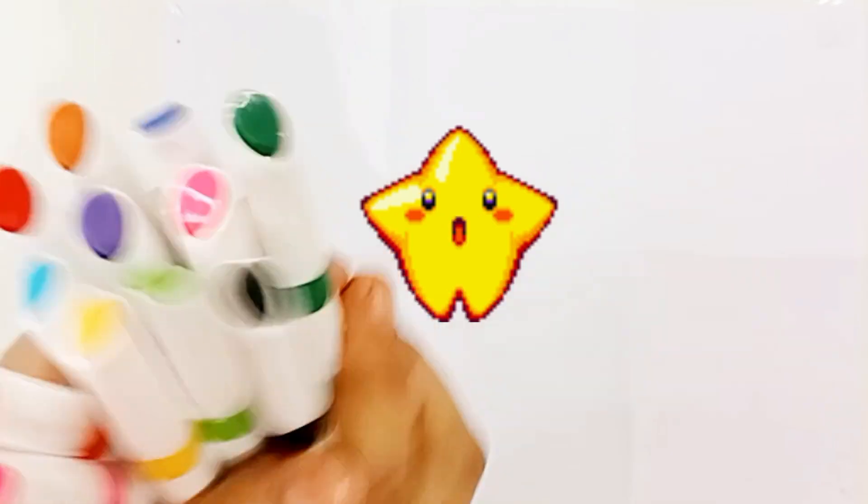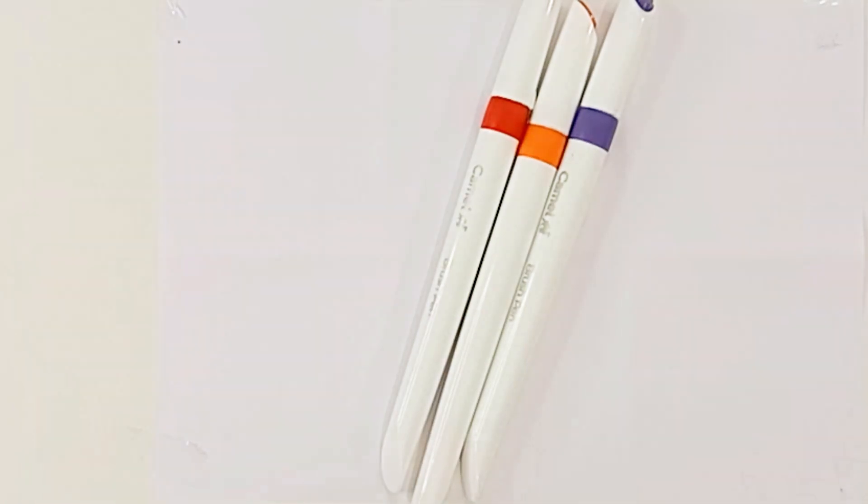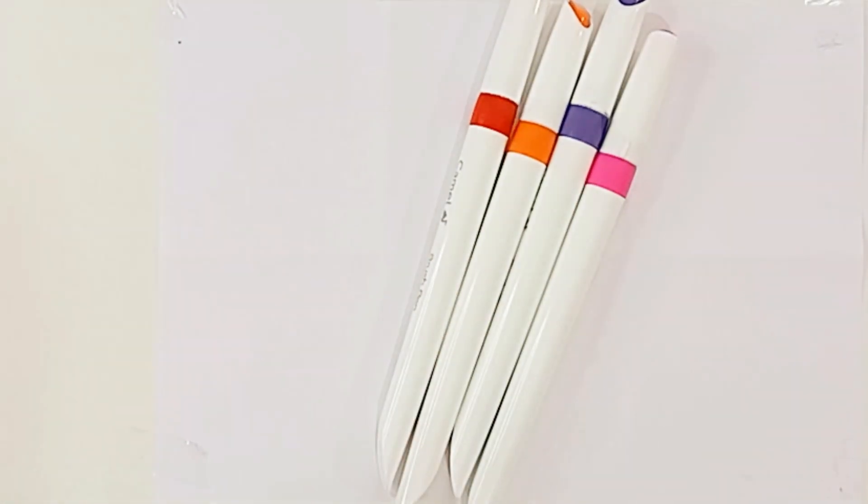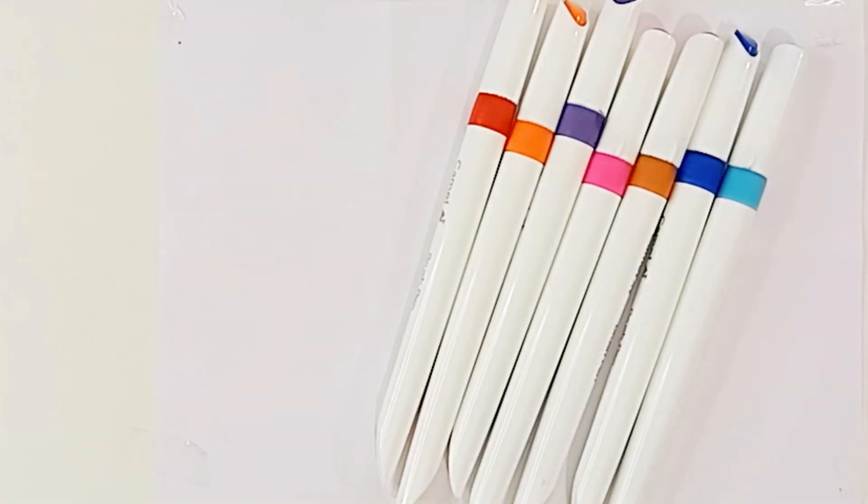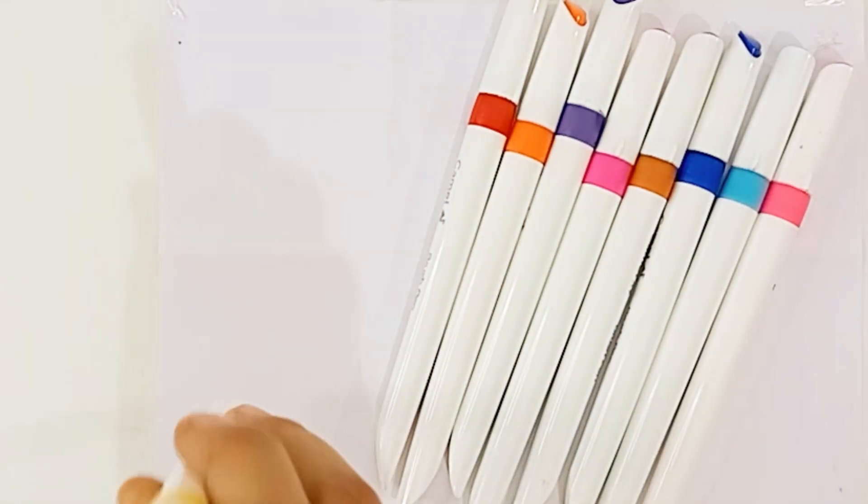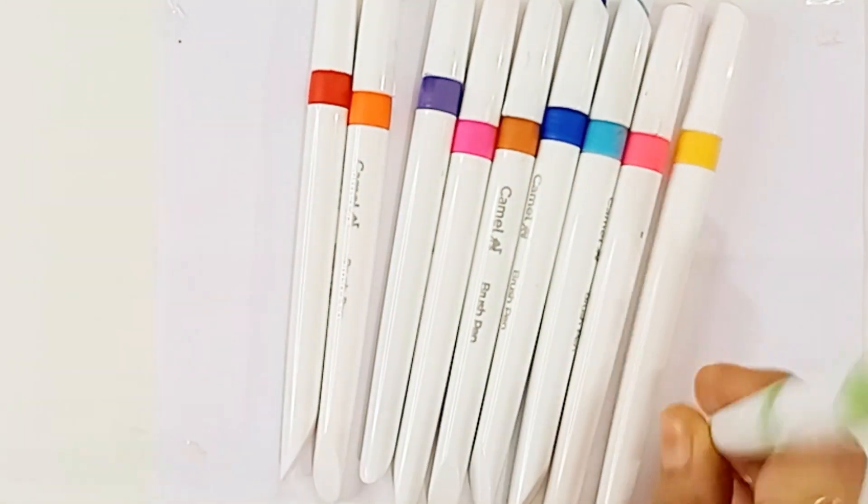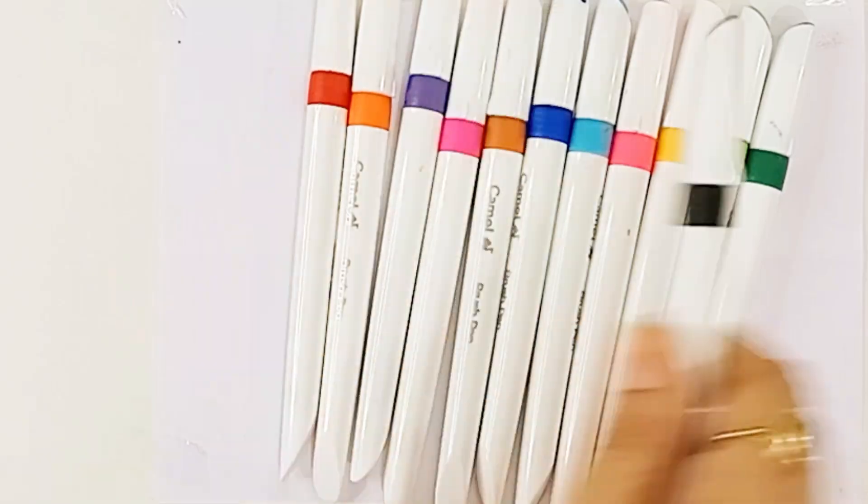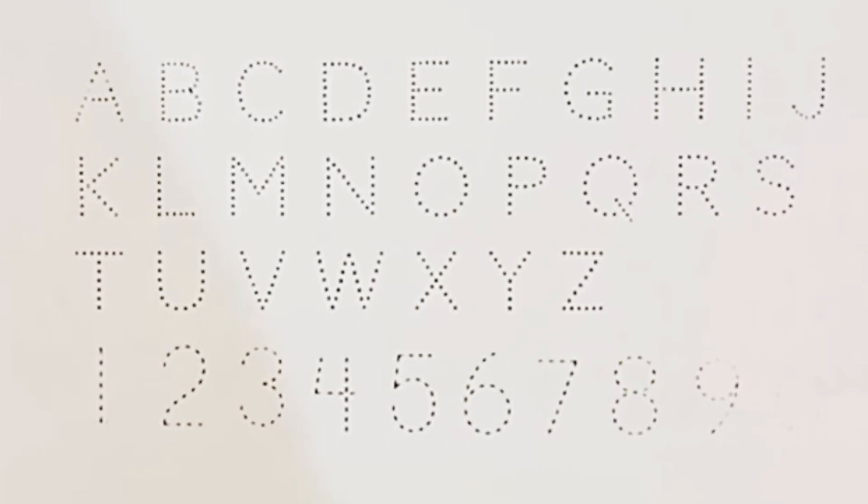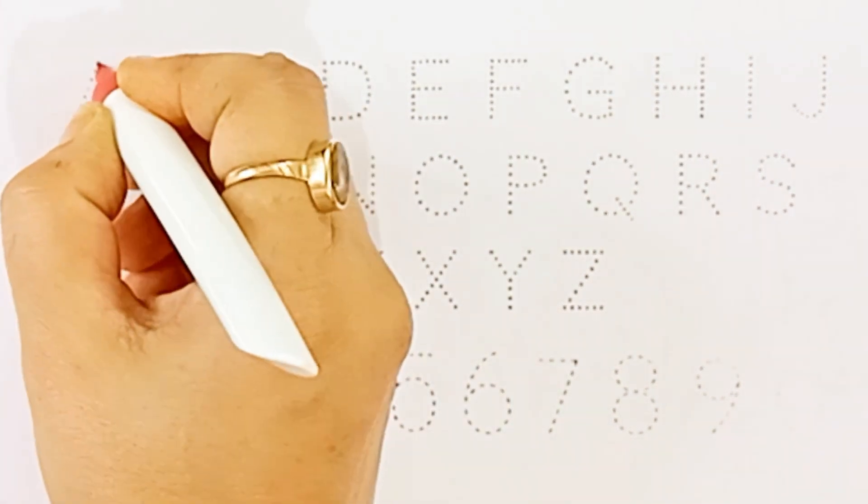Hello everyone, let's learn some colors and shapes. Red color, orange color, purple color, dark pink color, brown color, blue color, sky blue color, light pink color, yellow color, green color, dark green color, black color. Let's learn some alphabets and numbers. A, red color.